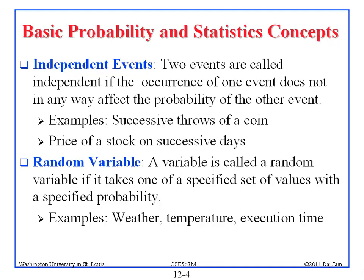The first thing we sometimes use is independent events. Two events are called independent if occurrence of one does not in any way affect the probability of the other. For a fair coin, it doesn't matter.